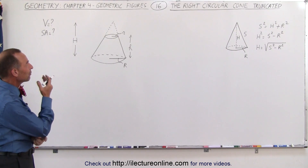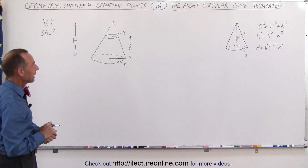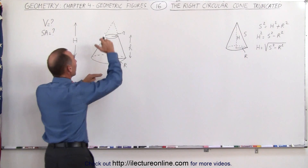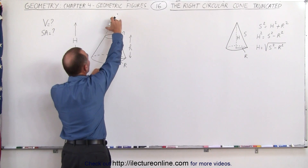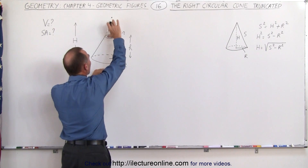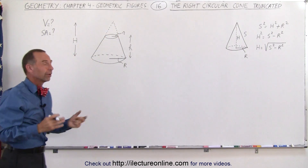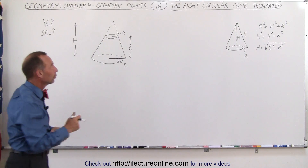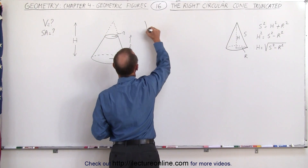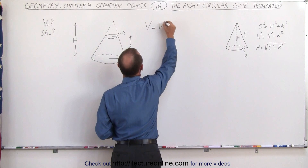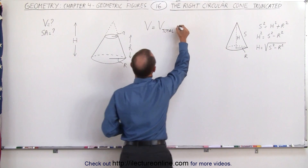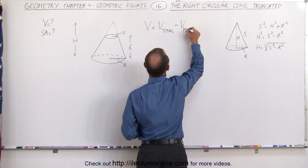First of all, how would we find the volume of a truncated cone like this? The best way to do that is to first find the volume of a non-truncated cone and then subtract from that the small piece that is removed — think of that as a cone in itself. So the volume is going to be the volume of the total cone minus the volume of the missing piece.